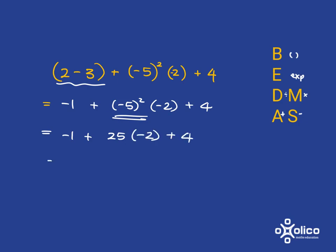Now what's my next step? I look to see if I've got any division or multiplication, and I do have some division or multiplication. That's over here. So this is the multiplication: 25 multiplied by negative 2. That's going to give me negative 50.